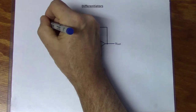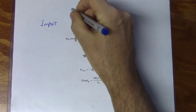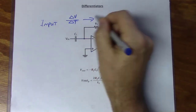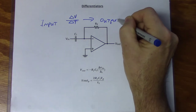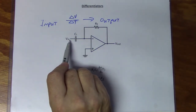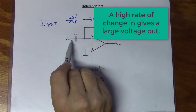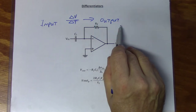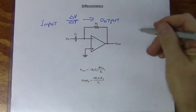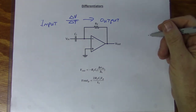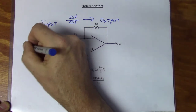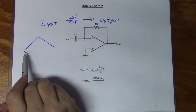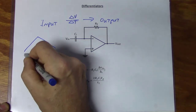We have an input and we're looking at the change in voltage over a change in time, and that gives us an output. So if the rate of change in voltage is really fast over a short period of time, the output voltage will be very high. If the rate of change is very slow, the output voltage is going to be very low. A triangle wave gives you a really good example of that — its rate of change is linear.